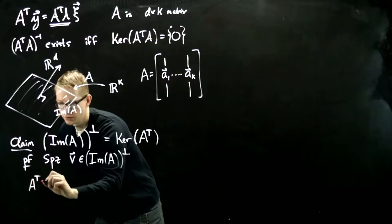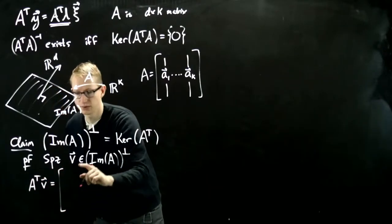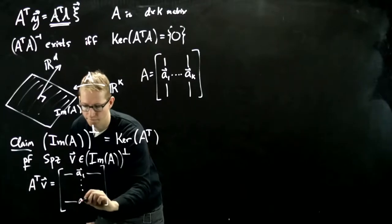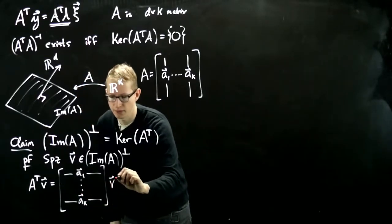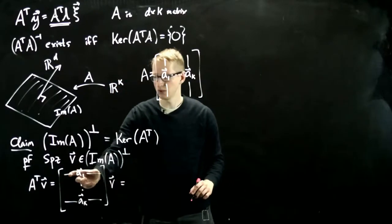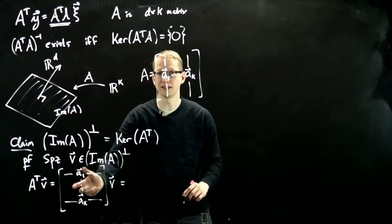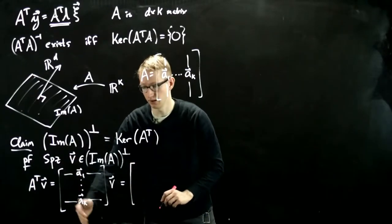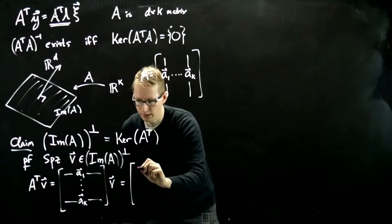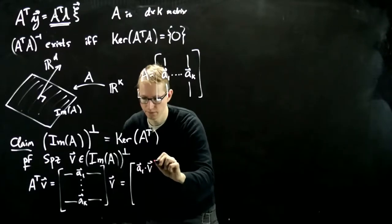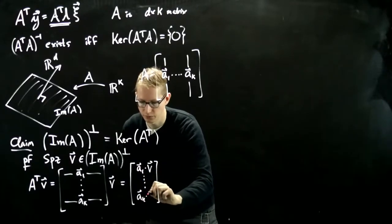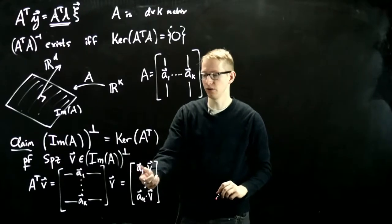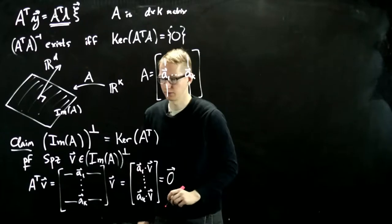Then let's see if it's in the kernel of A transpose. When we take A transpose applied to V, we write the matrix A transpose, take these columns and turn them into rows, and apply it to the vector V. But matrix multiplication tells us that when we do this, we take this row, multiply it by this vector, we take the dot product. So this equals another vector in RK, and what we get is A1 dot product with V as the first entry, all the way down to AK dot product with V. But if V is in the orthogonal complement of A, then all of these dot products are zero. So this is actually the zero vector.